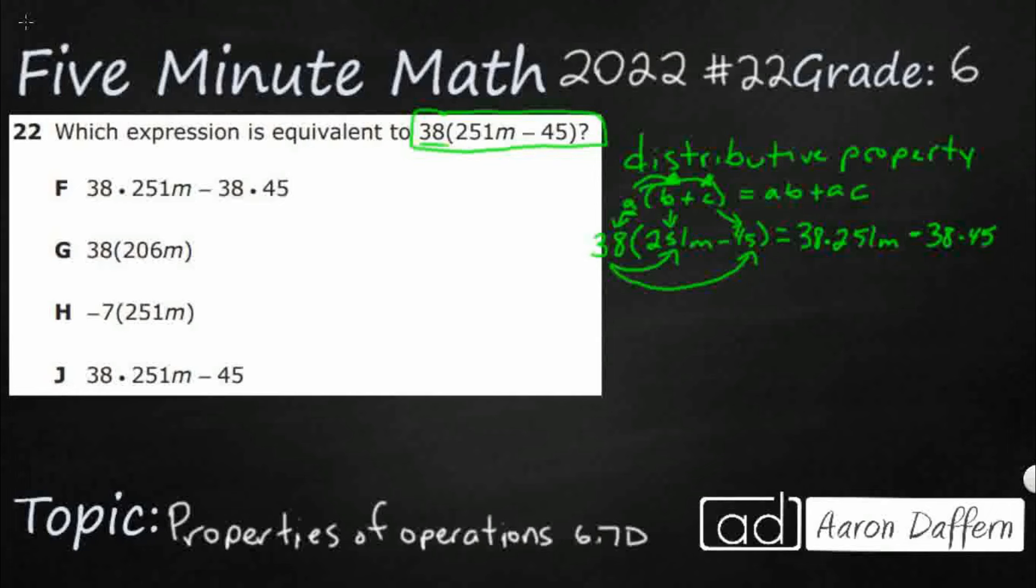So, this is an example of the distributive property. I could just take my 38 and multiply it by both terms inside of the parentheses. And do we have anything that looks like this? Well, yeah. F looks just like it. So, it looks like we were copying F. So, you know what?